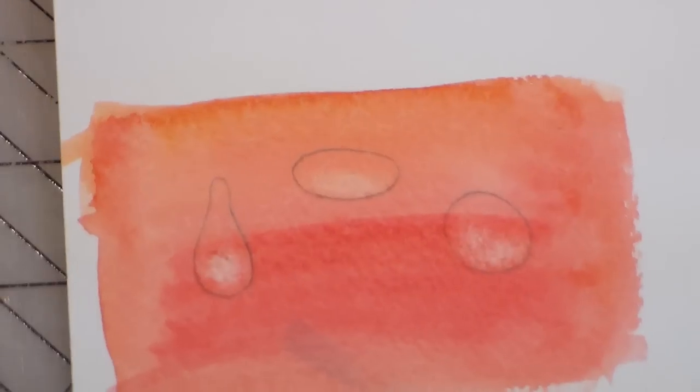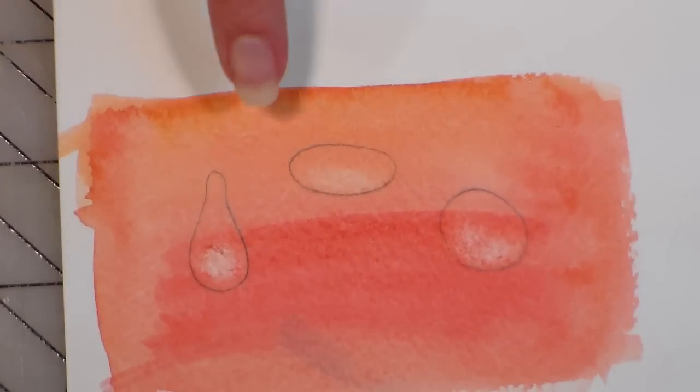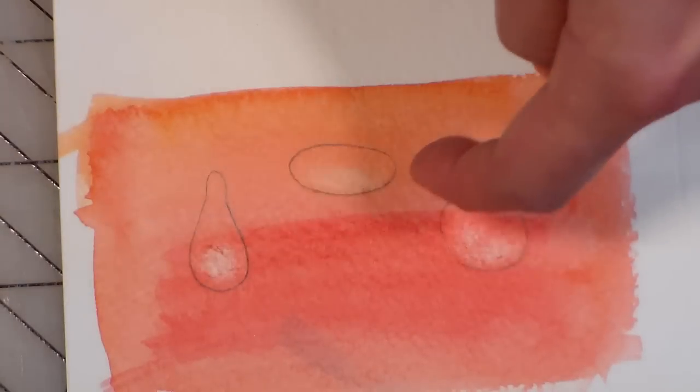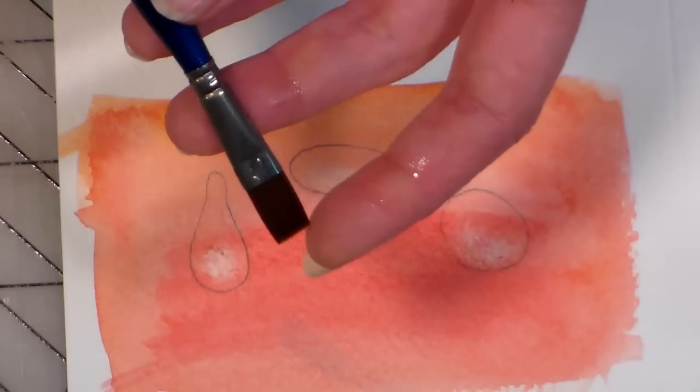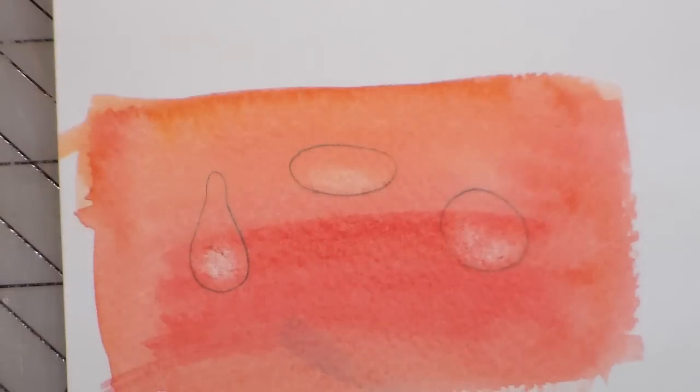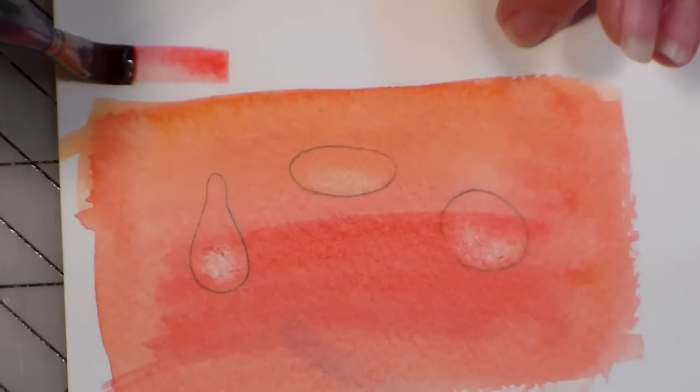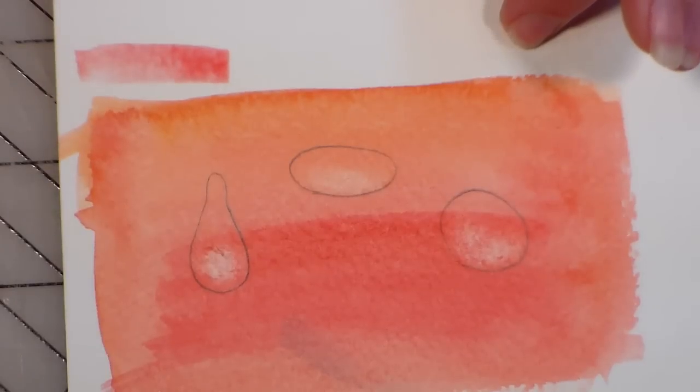Okay, now what we have is we have to do the shadow underneath the drop. So for lights coming from above or from this side, our shadow is gonna be underneath, so what I'm going to do is use a darker color of the petal and I'm gonna load it up on one corner of my brush.